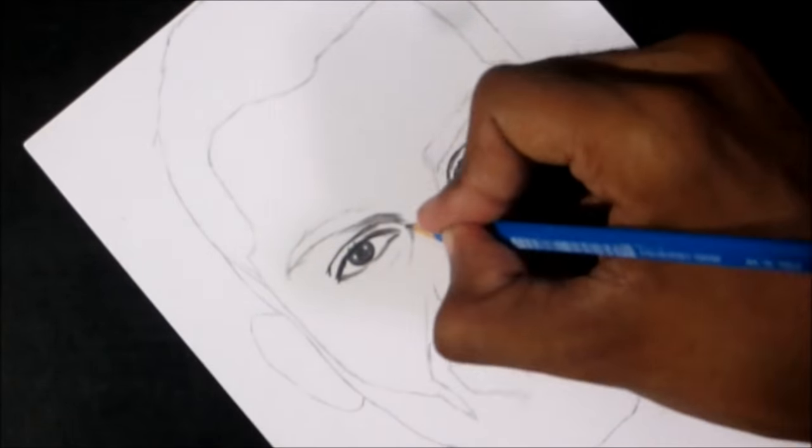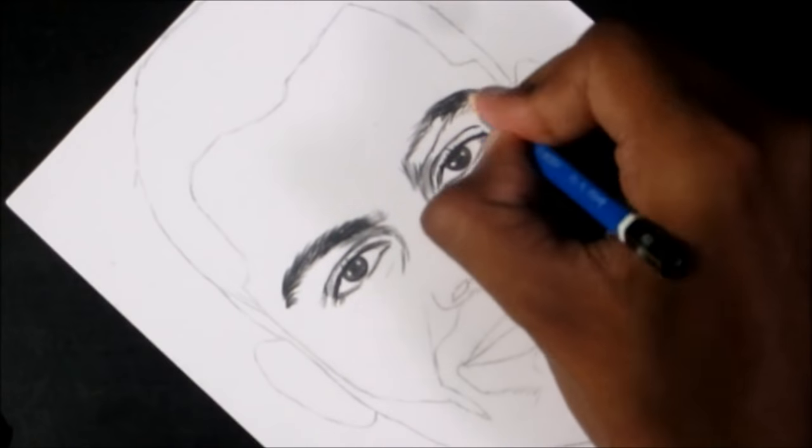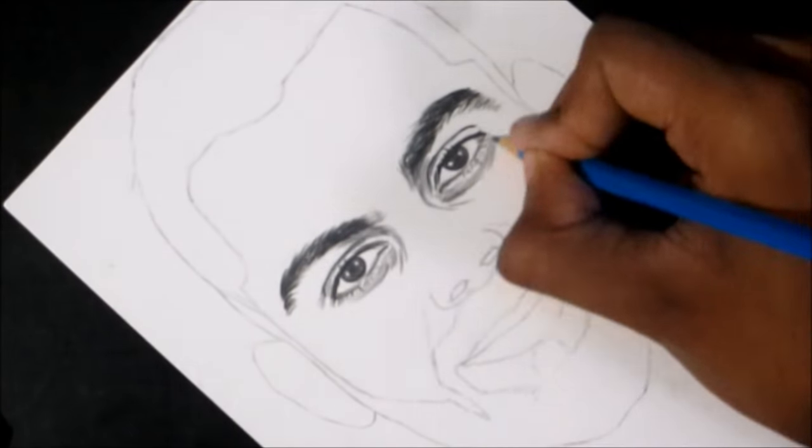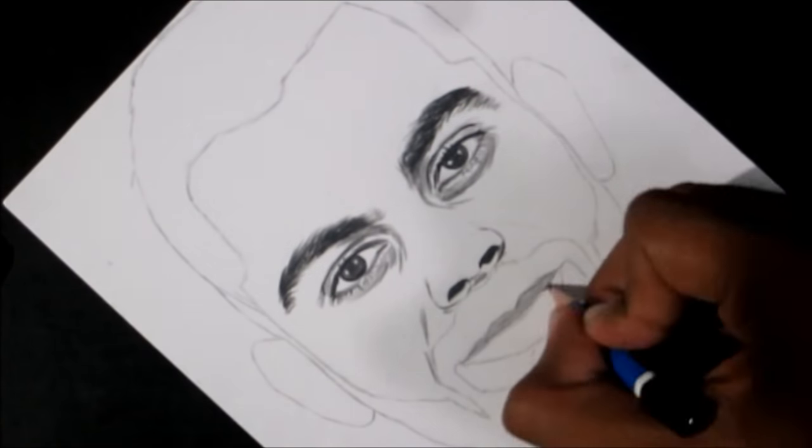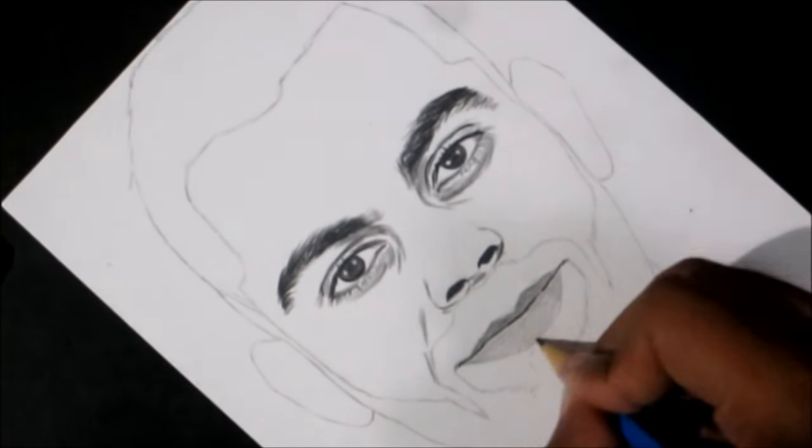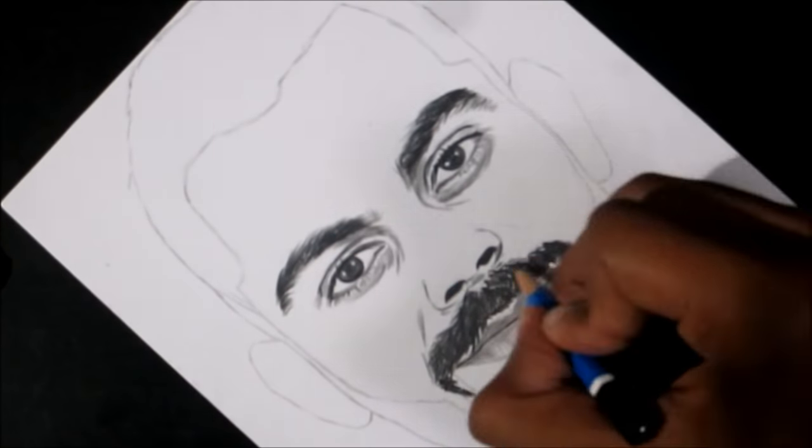For shading I have used HB, 2B, 4B, and 6B pencils. HB for the face, 2B and 4B for the hair and the eyes, 4B for the beard, and for blending I have used a blending stump.